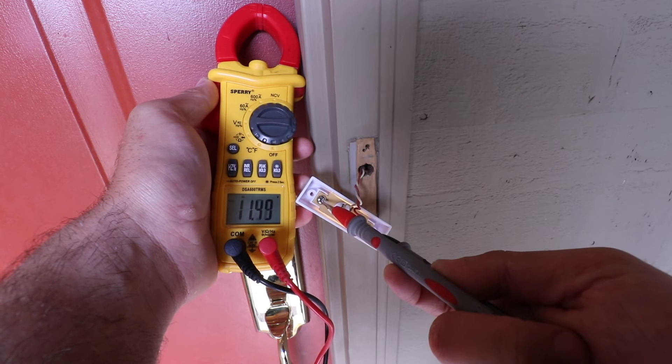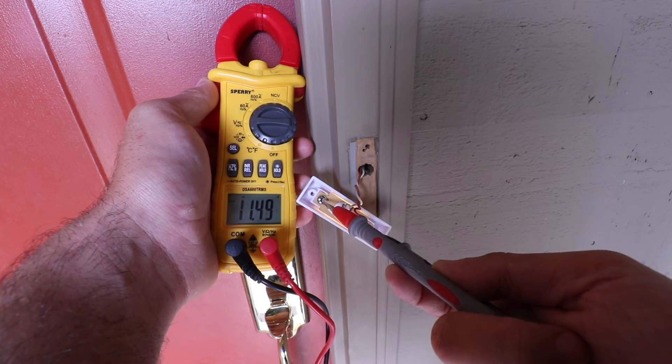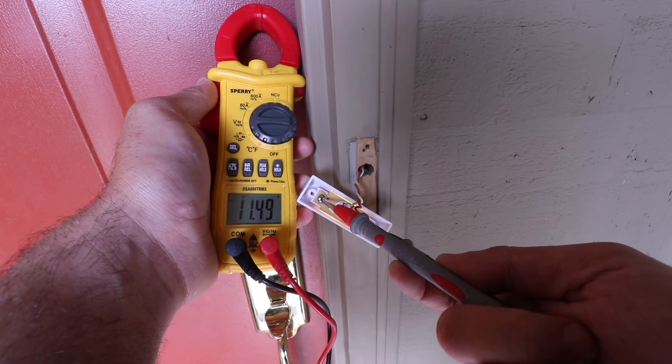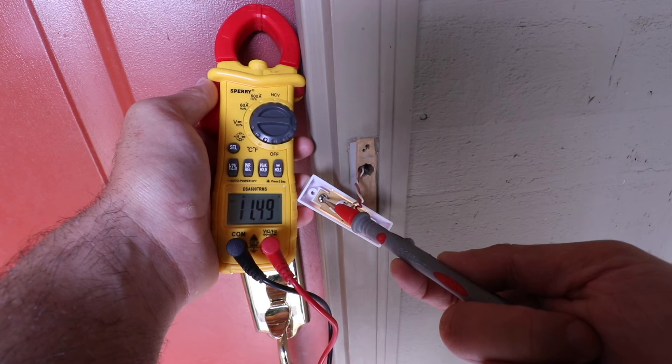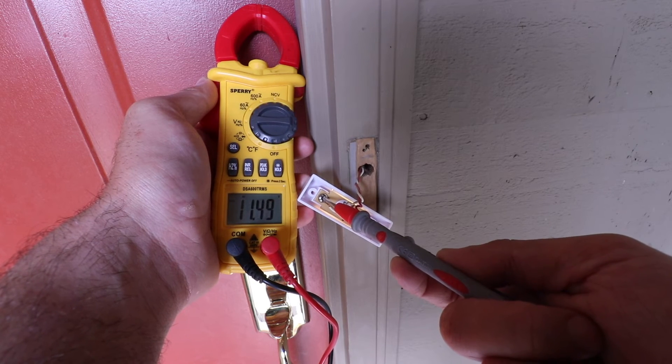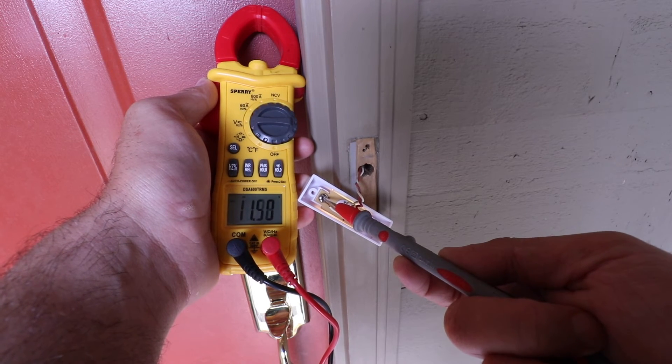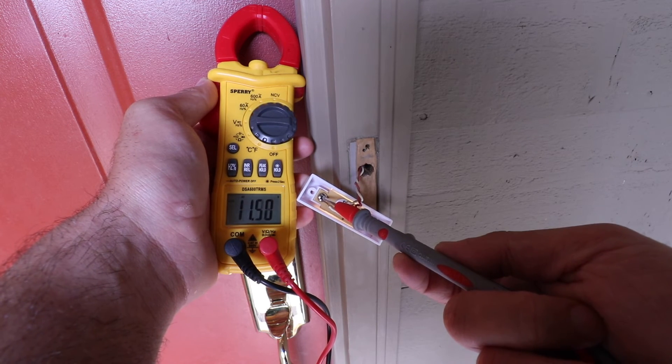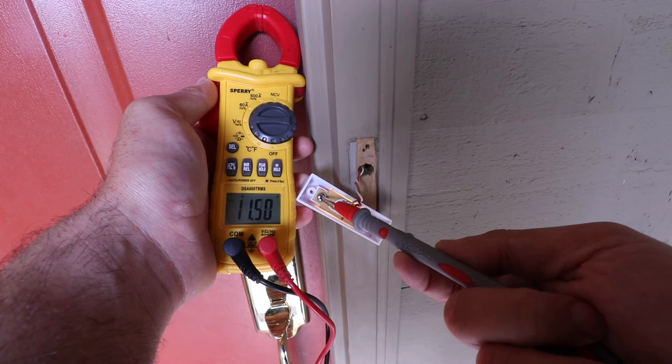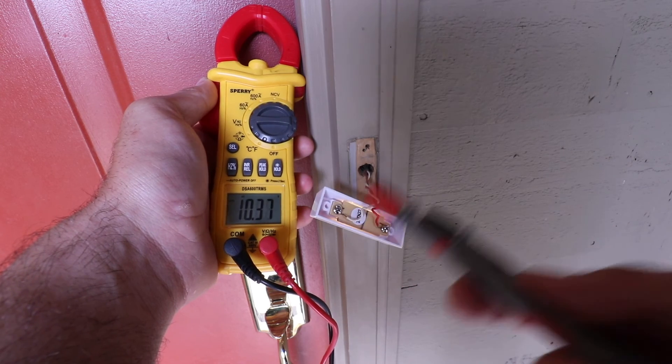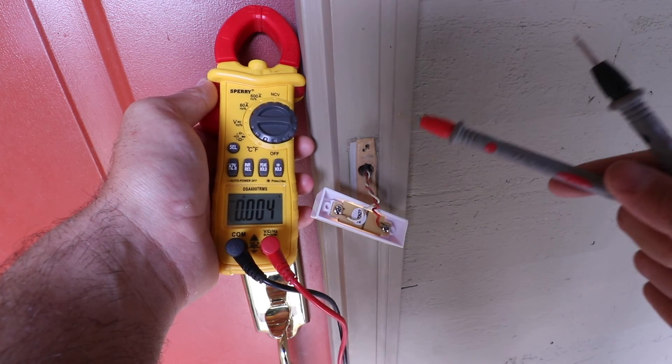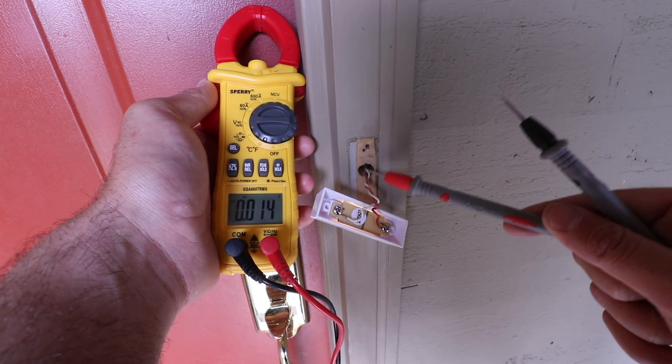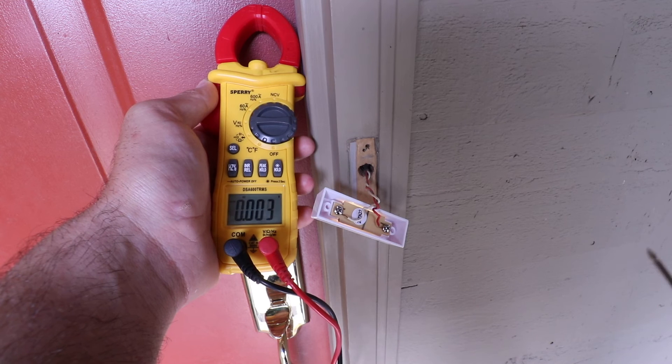Now what this also tells us when we have voltage to the doorbell and we are getting a reading is that the transformer is currently working and that we have a continuous circuit between our doorbell and transformer and the power supply. If you get a reading of zero volts on your existing doorbell it means most likely that your transformer has burned out, that your doorbell chime has burned out or somewhere there is an interruption in this circuit where a wire may be frayed or cut due to remodeling.